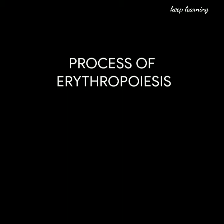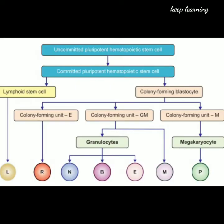Moving on to the process of erythropoiesis. RBCs in the bone marrow are produced from hematopoietic stem cells. These cells are called uncommitted pluripotent hematopoietic stem cells. These cells are not designed to form a particular type of blood cell, hence the name uncommitted. When these cells are designed to form a particular cell, they are called committed pluripotent hematopoietic stem cells.